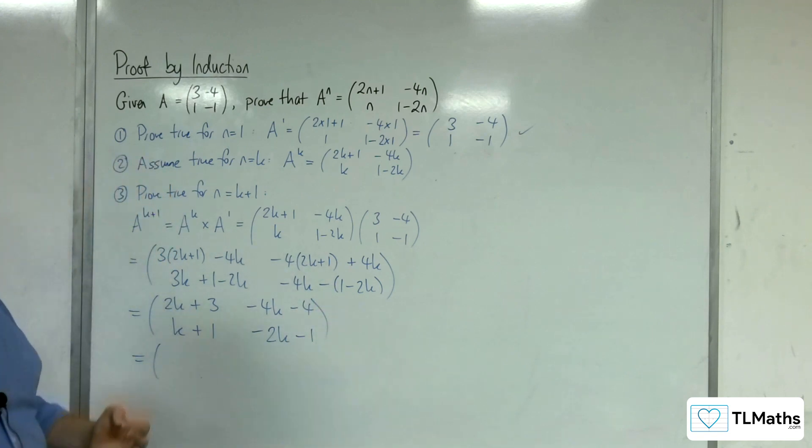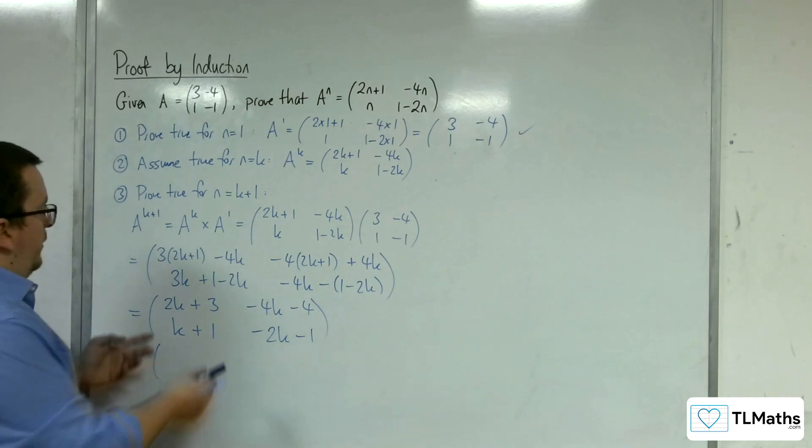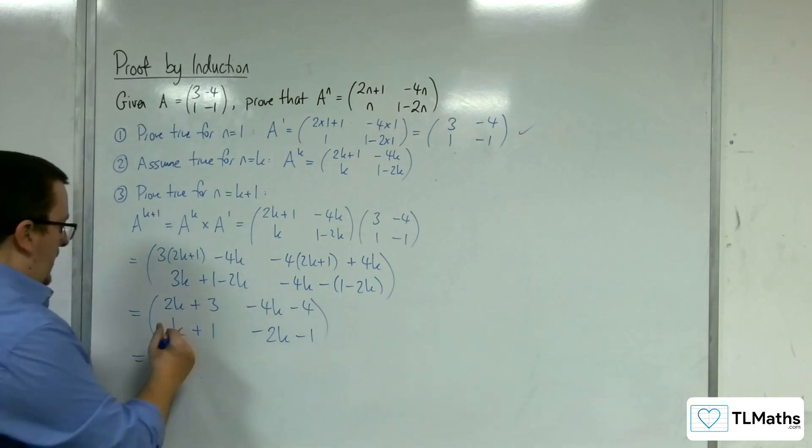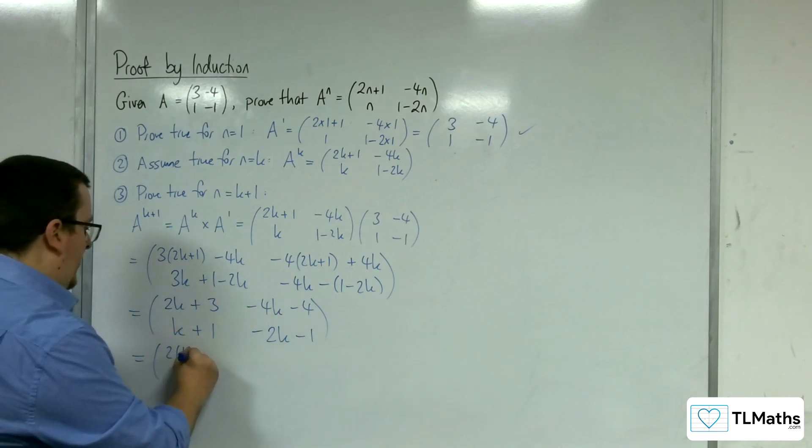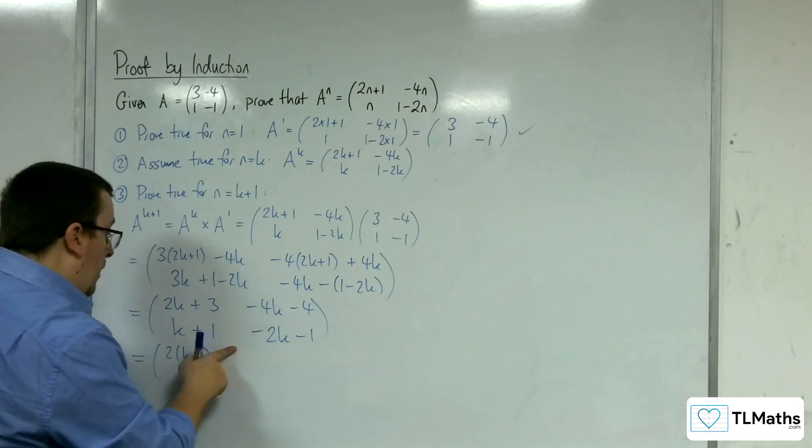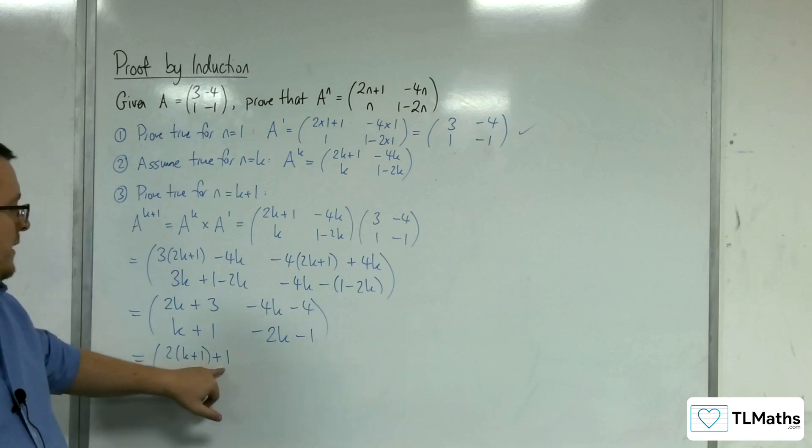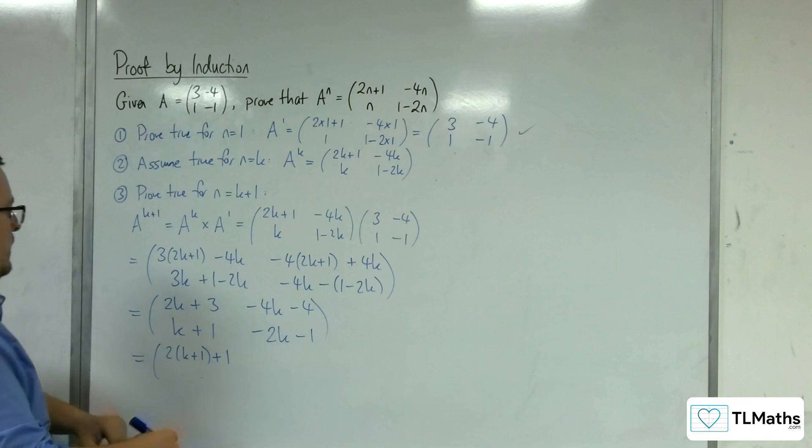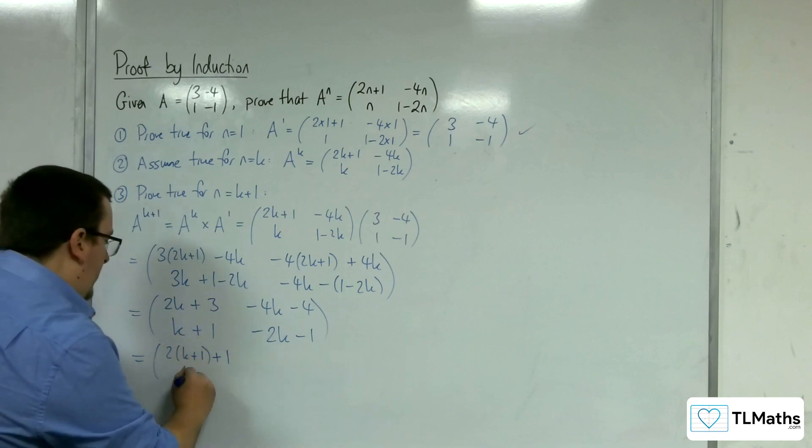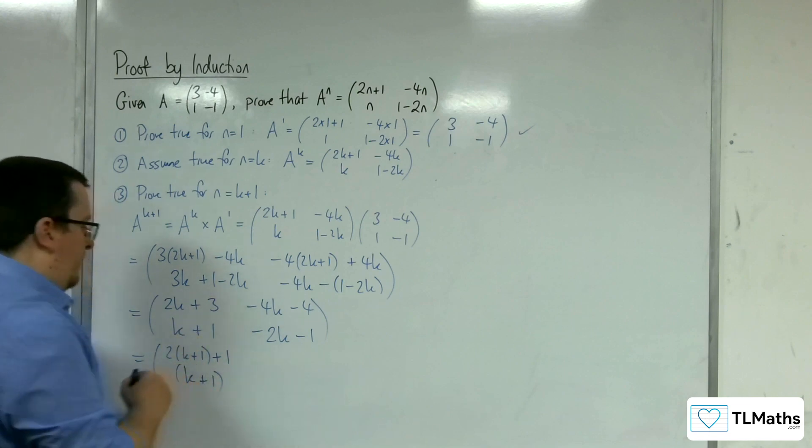Now we want to make sure we're in the correct format. So 2k plus 3 is 2 lots of k plus 1 plus 1. So 2k plus 2 plus 1 gets us the 2k plus 3. We've got the k plus 1 already there, so nothing to change with that.